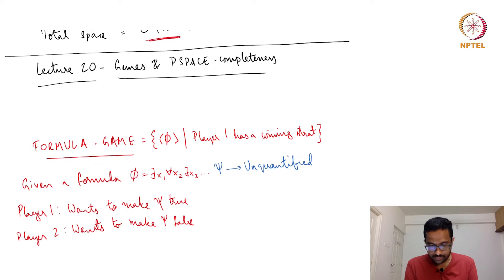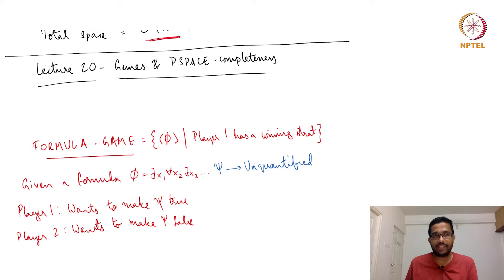Welcome to lecture 20 of the course Computational Complexity. This lecture is going to be short but interesting. In the last lecture we saw what PSPACE completeness is — a notion of completeness for the class PSPACE. A language is PSPACE complete if it is in PSPACE and all languages in PSPACE are reducible to that language in polynomial time.